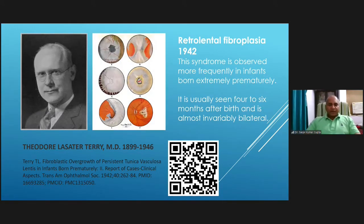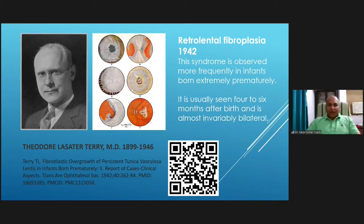Here we have Dr. T. L. Terry, who was the person who could actually differentiate ROP from a better known disease, which is persistent primary hyperplastic vitreous. He found out that this syndrome is different from PHPV in that it is more frequently found in premature and underweight neonates, is usually seen a few months after birth, and is usually bilateral — features which are absent in PHPV.